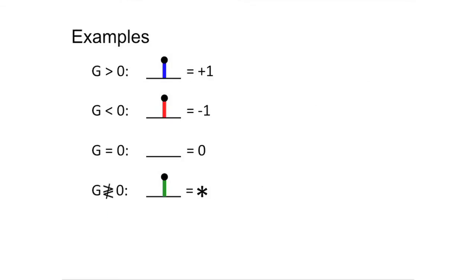Here are the simplest examples of each of the four kinds of games. A single move for L is called plus one. A single move for R is called minus one. A game that has no moves for either player is called zero.